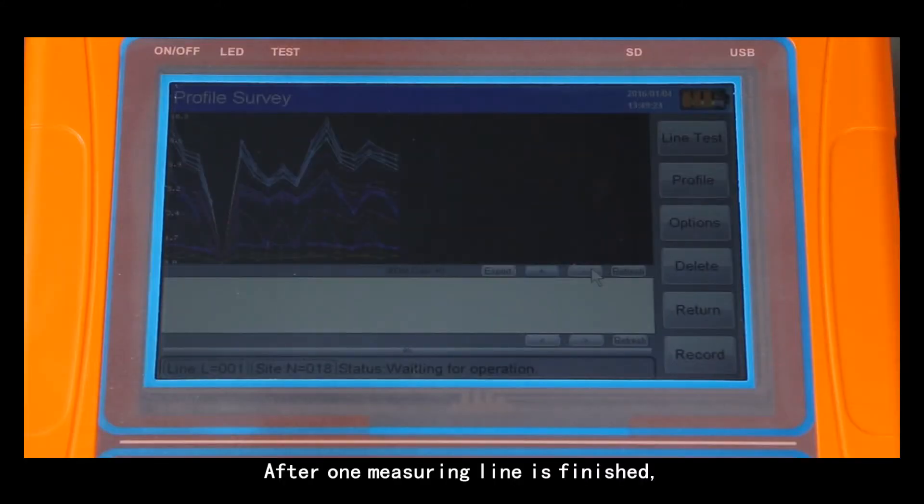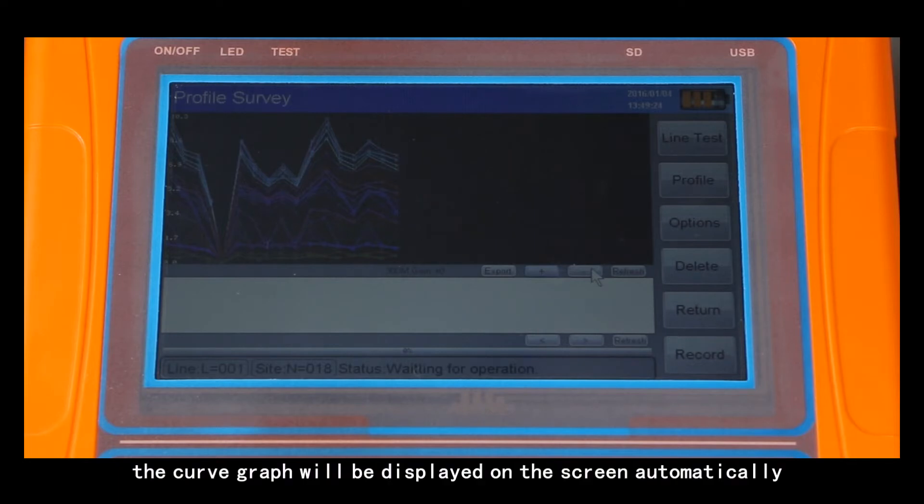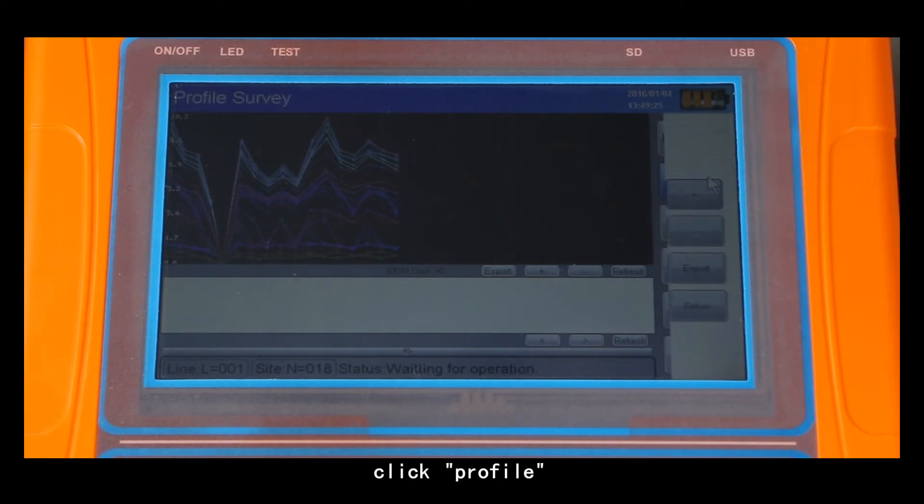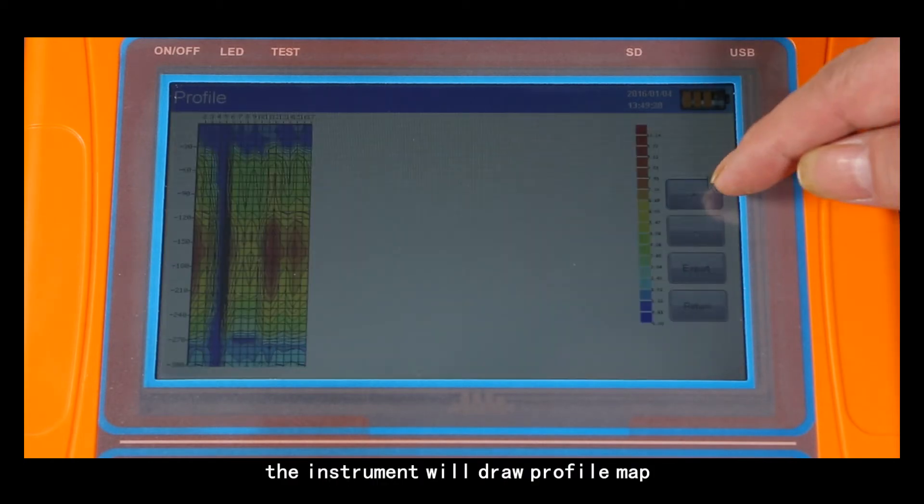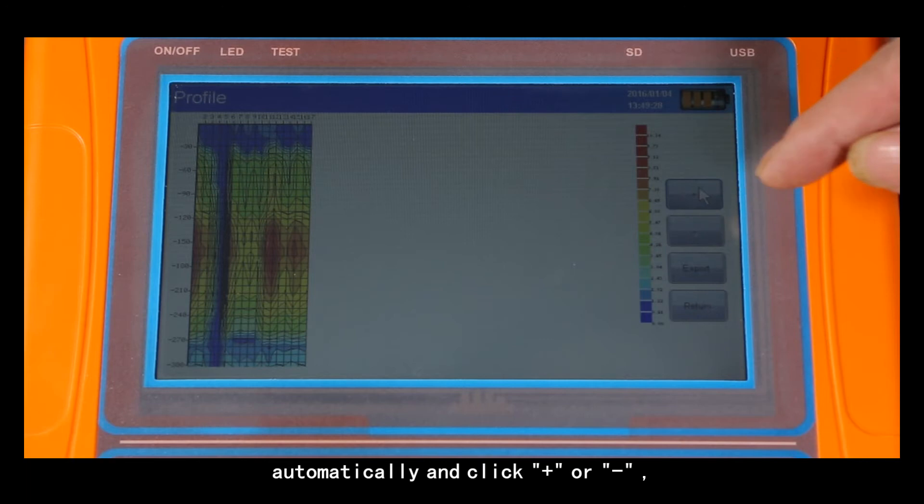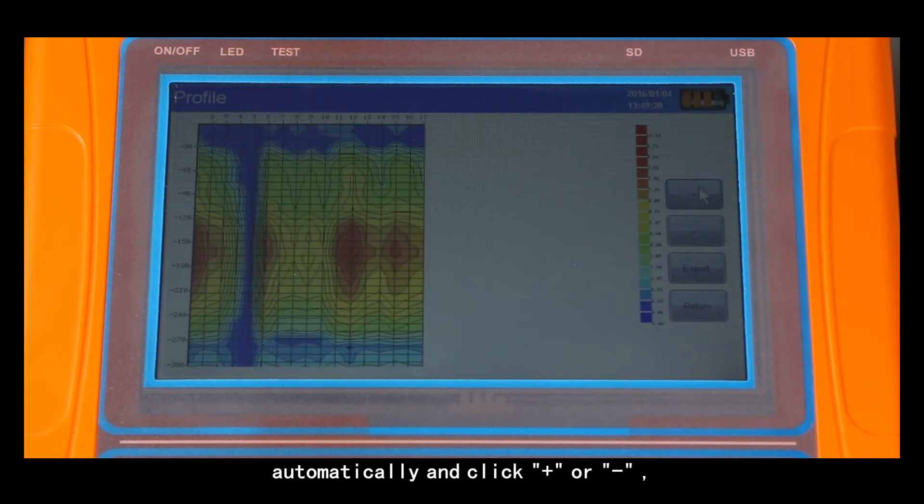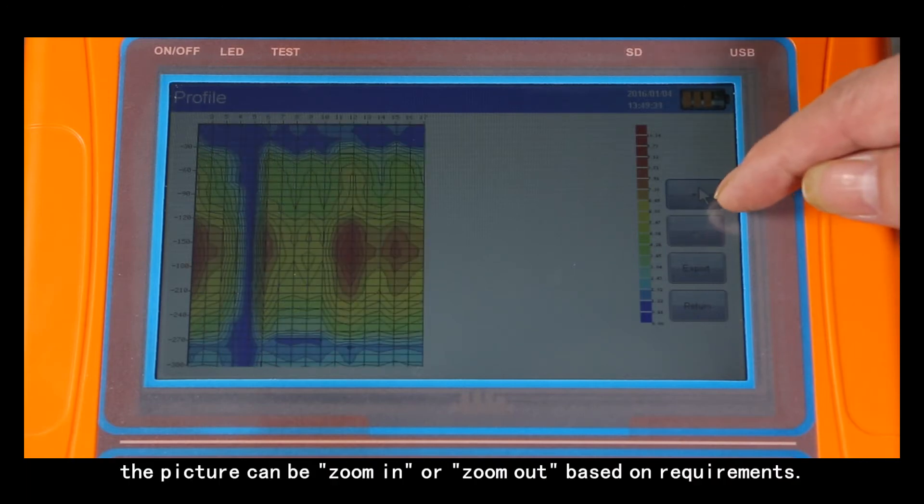After one measure line is finished, the curve graph will be displayed on the screen automatically. Click profile. The instrument will draw profile map automatically and click plus or minus. The picture can be zoom in or zoom out based on requirements.